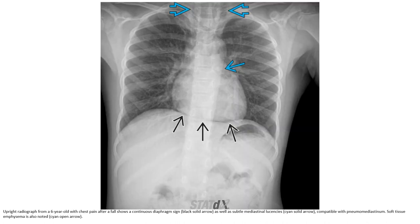AP radiograph from a 6-year-old with chest pain after a fall shows a continuous diaphragm sign, as well as subcutaneous mediastinal lucency, compatible with pneumomediastinum. Soft tissue emphysema is also noted.